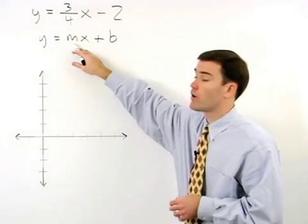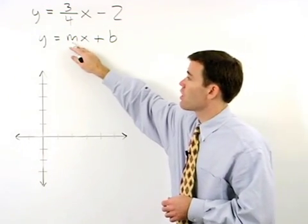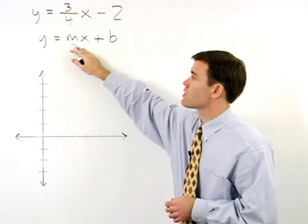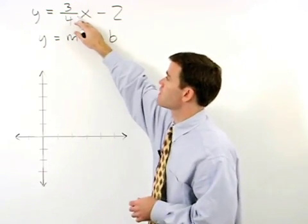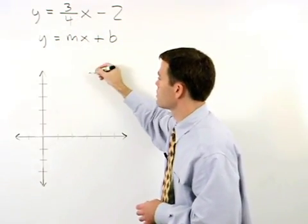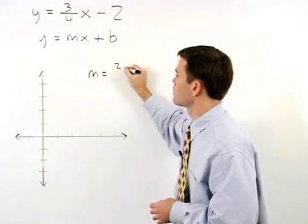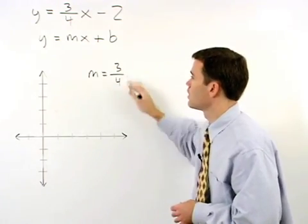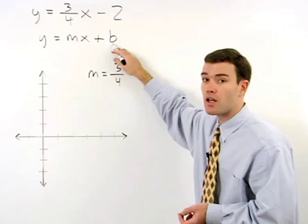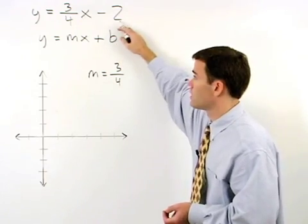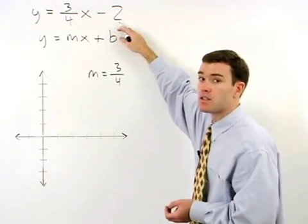Our slope, or m, is the coefficient of the x term, which in this case is 3/4. Our b, or y-intercept, is the constant term, which in this case is negative 2.